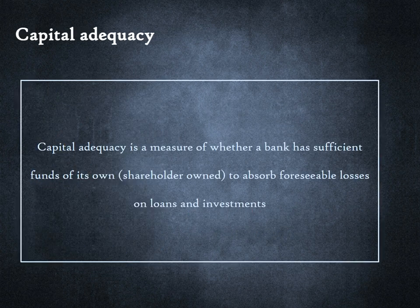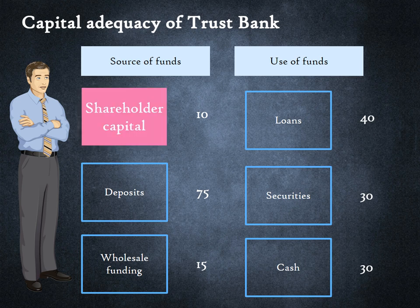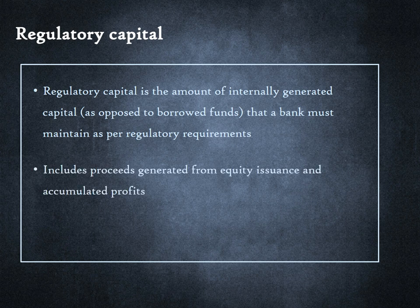Capital adequacy is a measure of whether a bank has sufficient funds of its own — meaning shareholder-owned funds — to absorb foreseeable losses on loans and investments. Let us go back to George and our fictional bank, Trust Bank. The bank, like any other bank, borrows mostly from depositors and deploys the funds in loans and investments. What happens if some of the borrowers cannot repay their loan? Trust Bank would not be able to repay depositors if the latter wanted to withdraw cash. However, since Trust Bank has its own funds of 10, it can cover the first $10 of losses without impacting depositors. Regulatory capital is the amount of internally generated capital, as opposed to borrowed funds, that a bank must maintain as per regulatory requirements. It includes proceeds from equity issuance as well as any accumulated profits over time. The requirement is expressed as a percentage of risk-weighted assets.